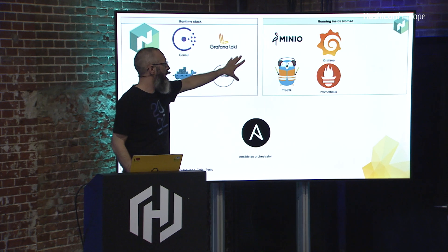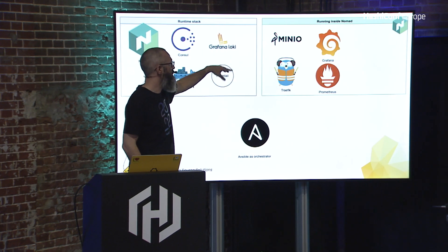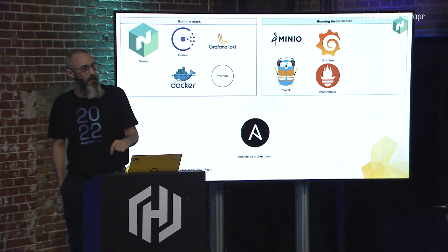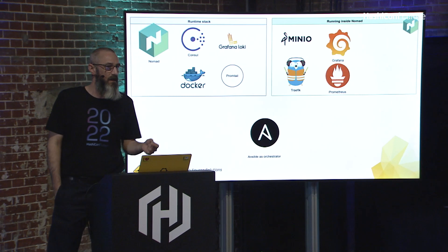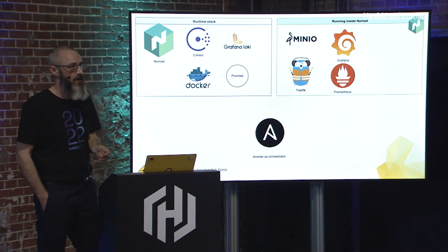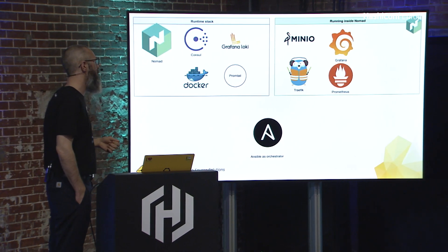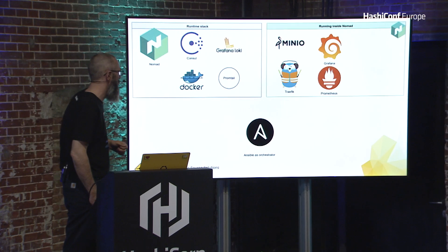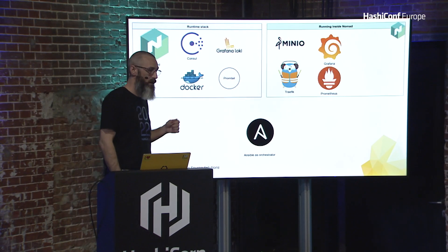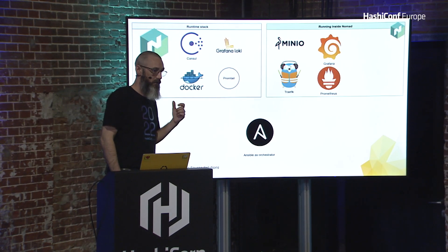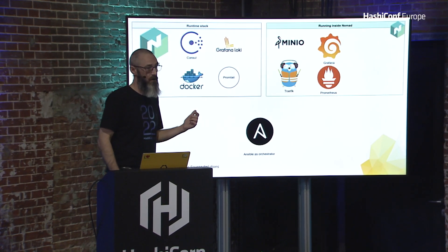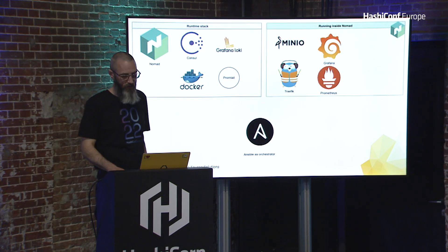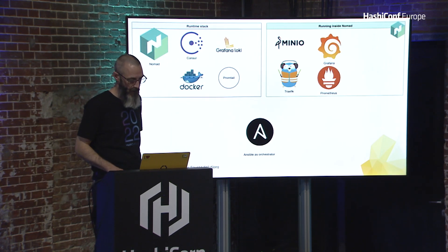The worker nodes only have the Docker client, Consul agent, and Promtail. Ansible orchestrates and sets up the runtime stack, then starts setting up things inside Nomad. Minio is used as the Loki backend — Loki needs an S3 backend to run nicely. Traefik runs as the ingress proxy on the master nodes only, and Prometheus runs inside the environment as well.